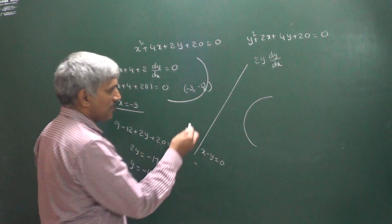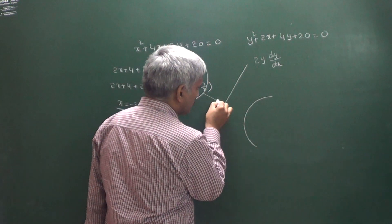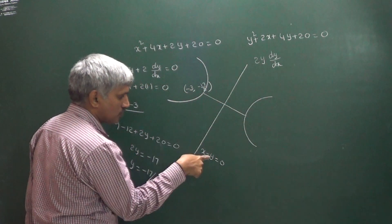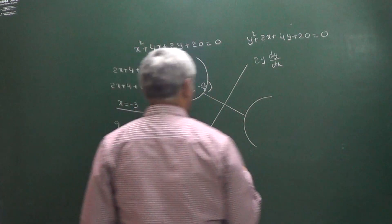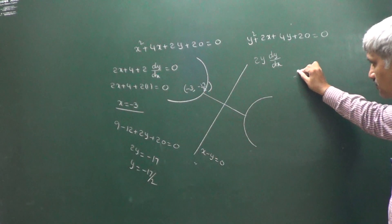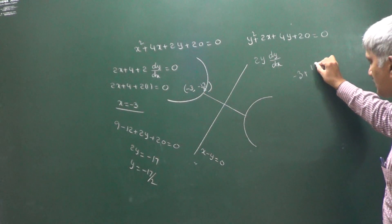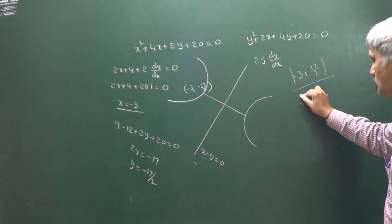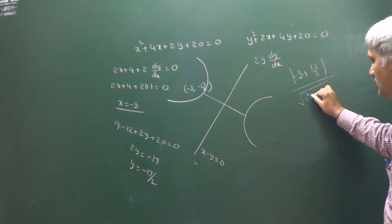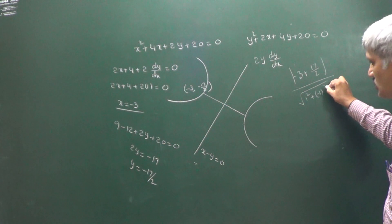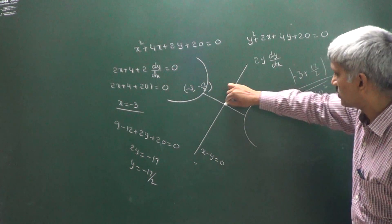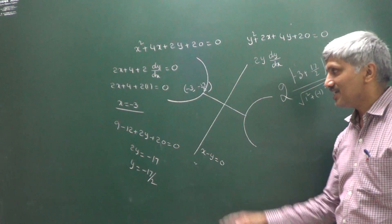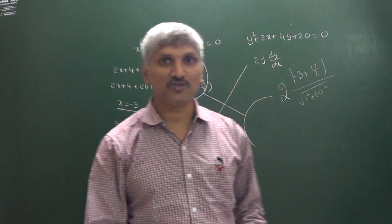We need the minimum distance between the two parabolas. From the point (-3, -17/2) onto the line x - y = 0, the perpendicular distance is |(-3) + 17/2| / √(1² + 1²). We then multiply by 2, giving us the minimum distance between the two parabolas.